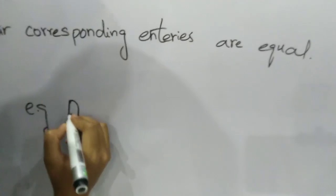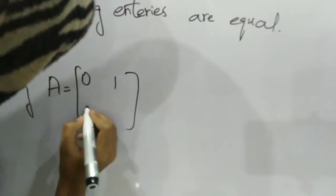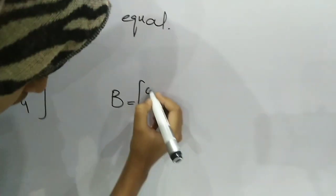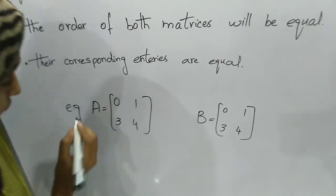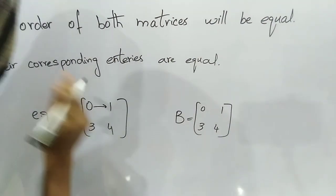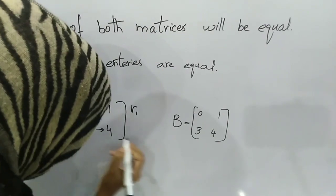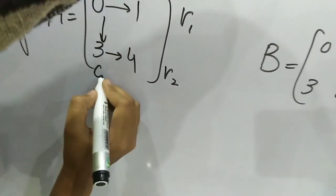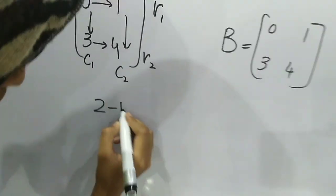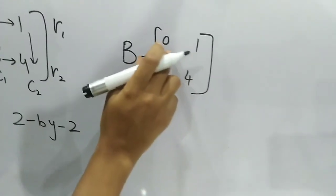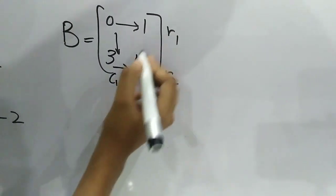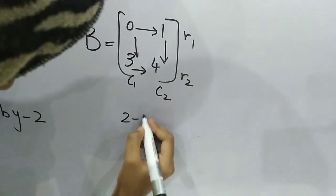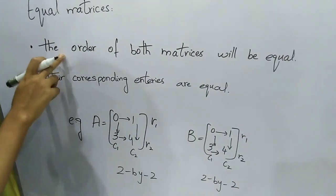For example, take two matrices: A with entries 0, 1, 3, and 4, and B with entries 0, 1, 3, and 4. First we check the order of matrix A: 1st row, 2nd row, 1st column, 2nd column — the order is 2 by 2. Now for matrix B: 1st row, 2nd row, 1st column, 2nd column — the order is also 2 by 2. The first condition is fulfilled.